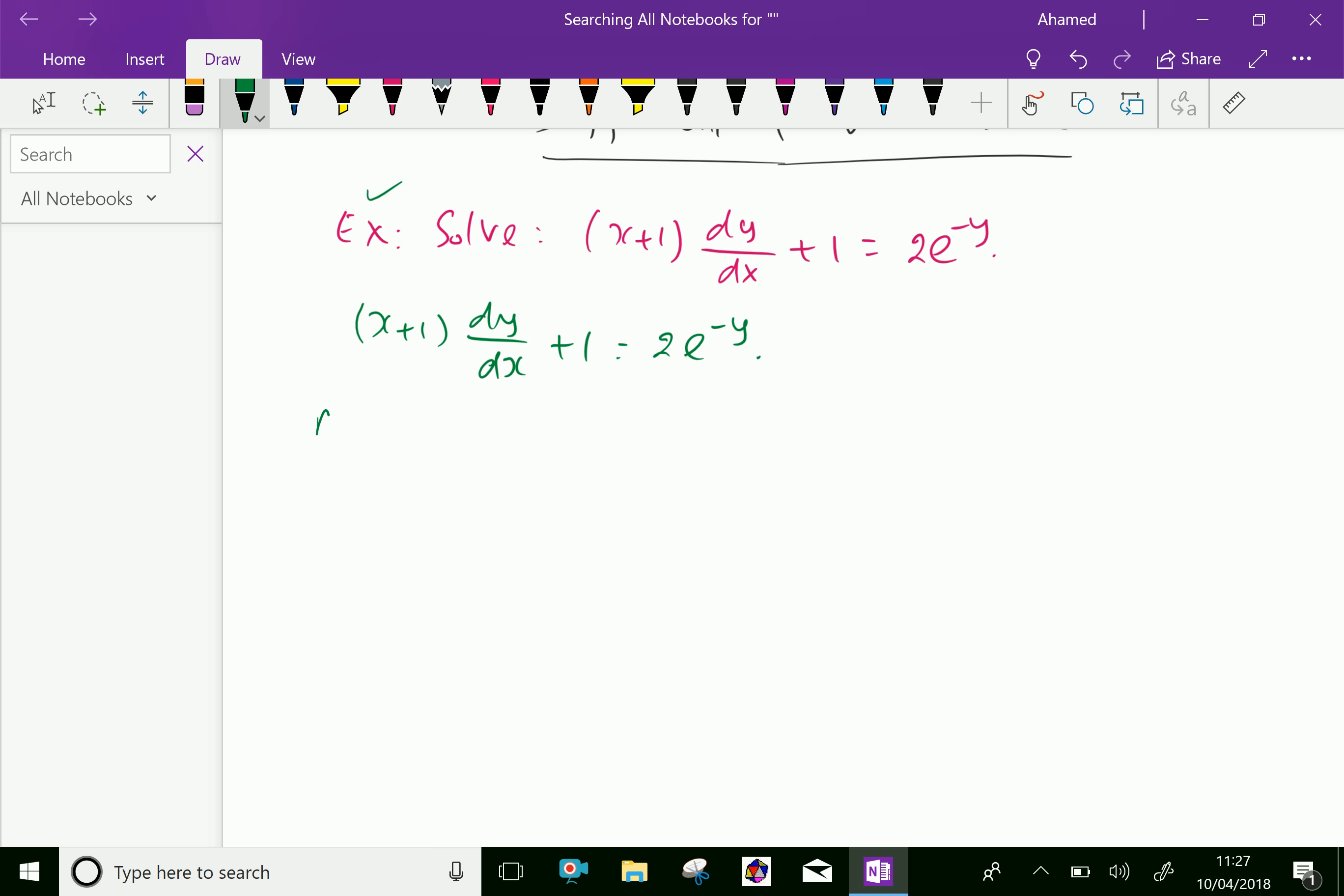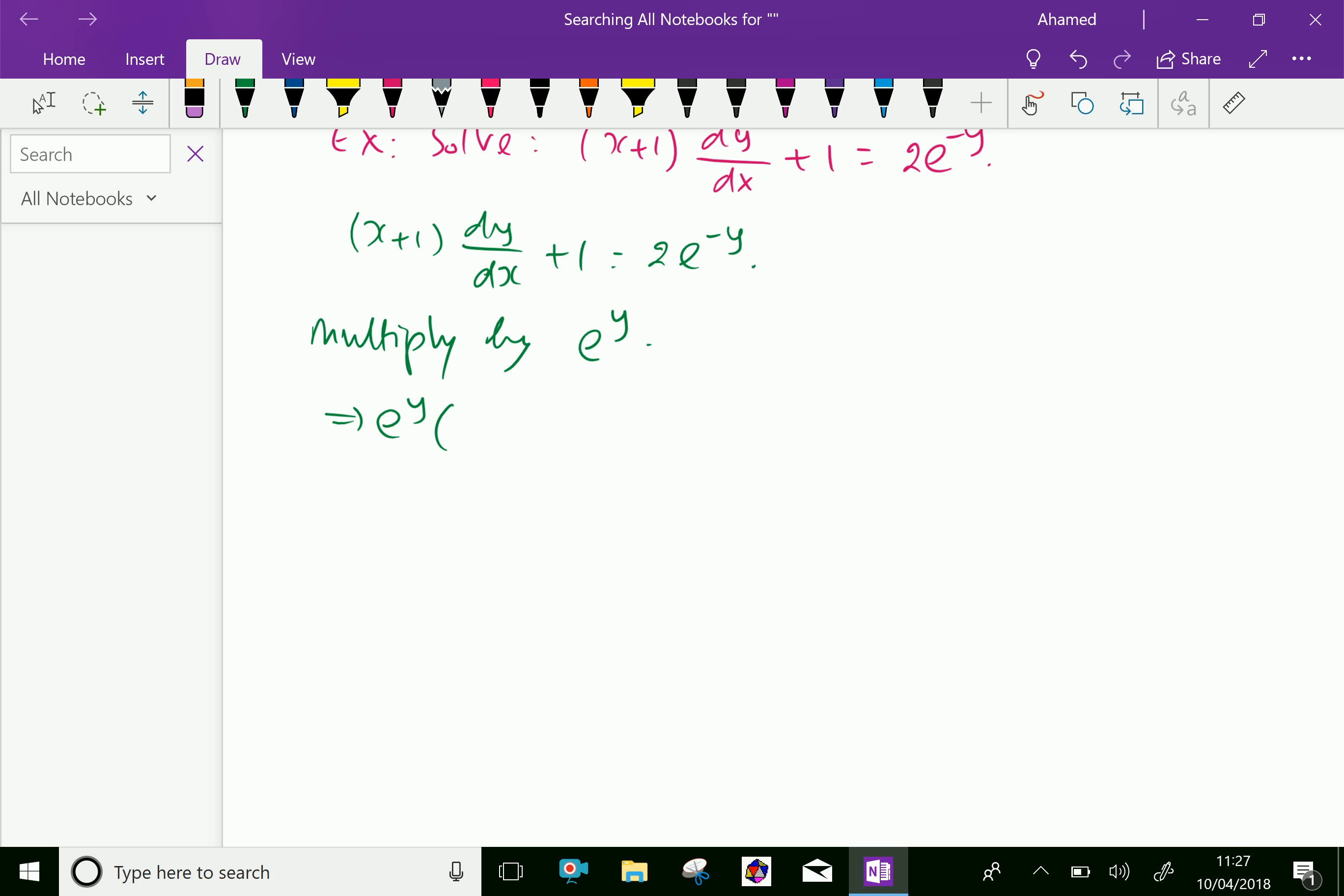Multiply by e^y. We get e^y(x+1)dy/dx + e^y = 2e^(-y)·e^y = 2.